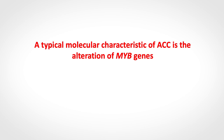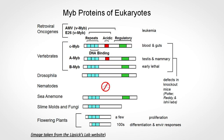Talking about molecular alterations in ACC, the most striking alteration is the mutation of a family of genes called MIB. MIB genes are conserved from plants to insects to humans, clearly indicating an important function in cellular physiology.